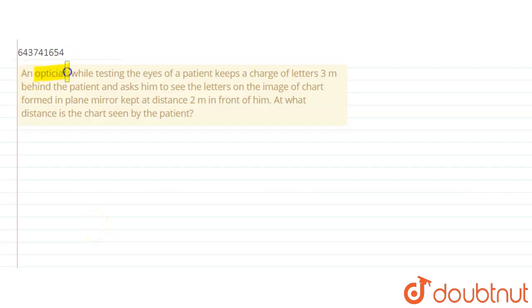The question says that an optician while testing the eyes of a patient keeps a chart of letters three meters behind the patient. So let's say the patient is sitting here, and the chart is three meters behind the person.